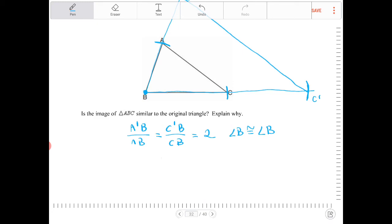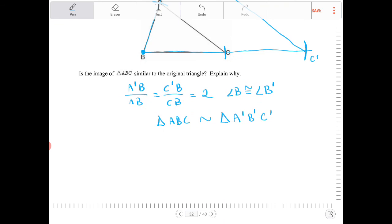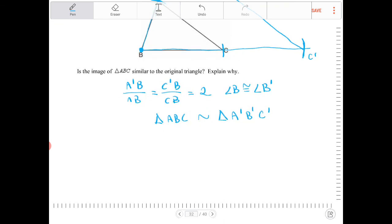So because of this, triangle ABC is similar to triangle A prime B prime C prime. I forgot I left out a prime there, because B prime and B, well, B prime and B, they're on the same point. So we can say that these two triangles are similar because of a side-angle-side similarity.